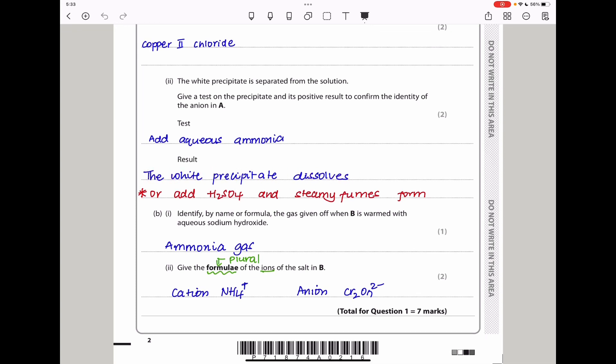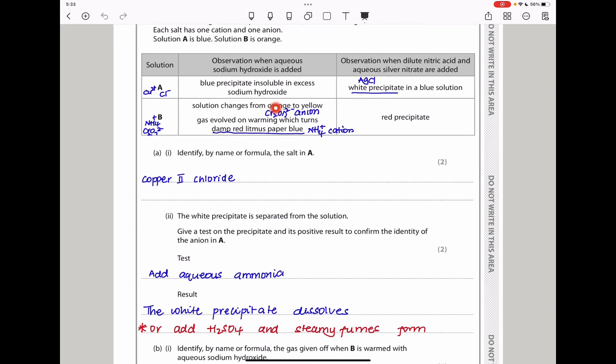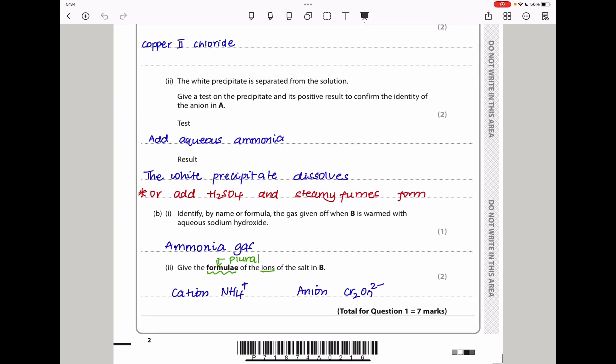They say identify by name or formula the gas given off when B is warmed with aqueous sodium hydroxide. Of course, I've already said that gas is ammonia. And then they say give the formulae, remember this is plural, of the ions of the salt in B. B had orange turned to yellow, it means the anion was a dichromate, and it produced a gas that turned damp red litmus paper blue. It means it had ammonium cation, so the salt should be ammonium dichromate. This brings us to the end of question one.